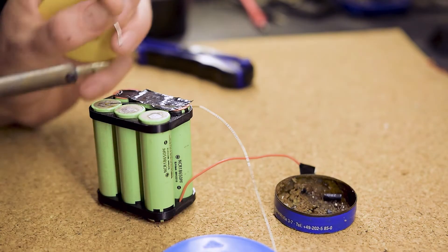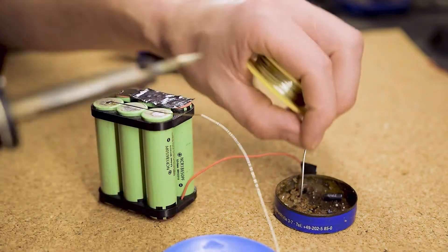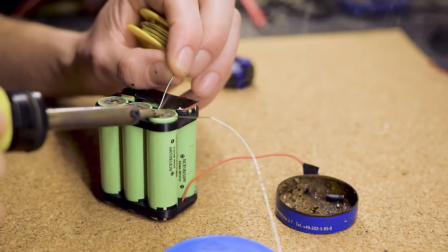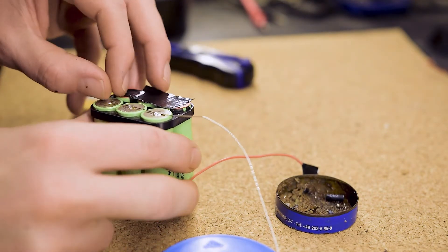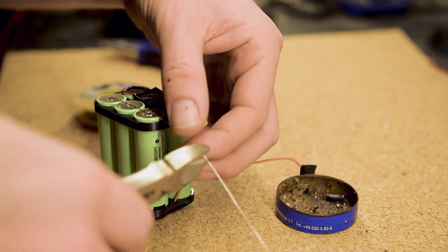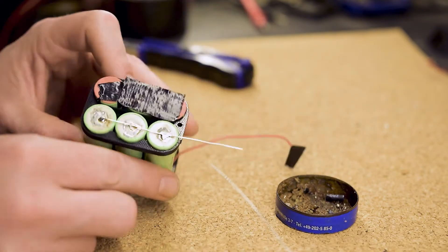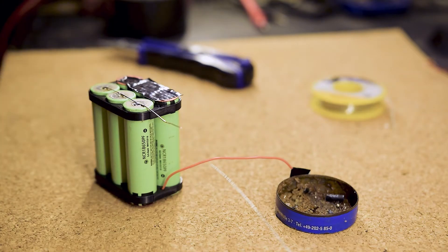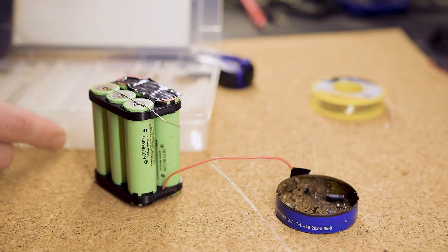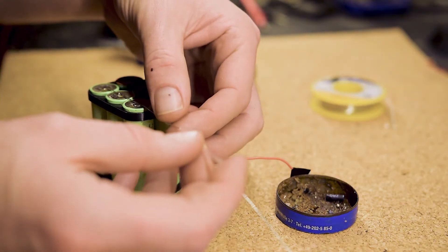Then we connect all of the negative contacts with the silver wire. This will be the battery's negative terminal. Again, check for cold solder joints. Afterwards, leave 4 cm of excess wire, cut the rest and put some heat shrink tubing onto the silver wire, but don't shrink it yet.